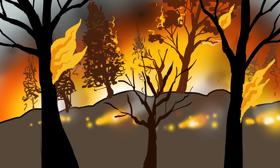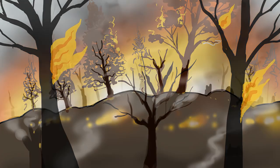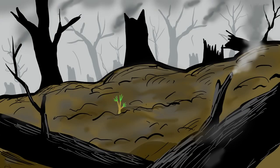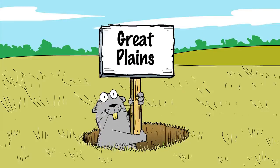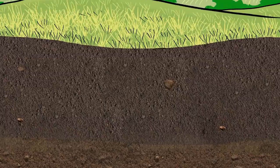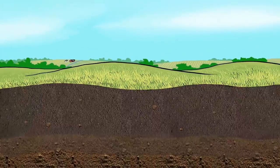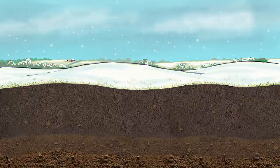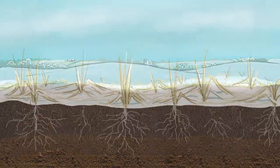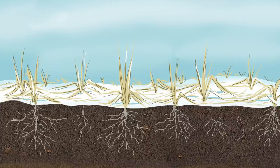If a forest is destroyed in a fire, it's the soil that brings back life. Prairie soils are rich, soft, and deep. They form under grasslands where the climate has warm summers and cold winters. When the grassland plants die back in winter, their leaves and roots remain.